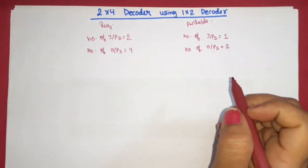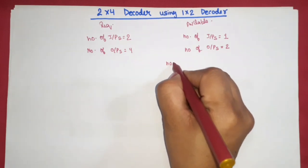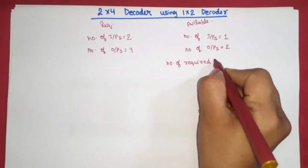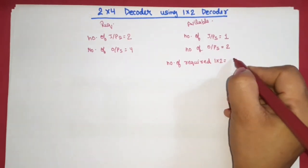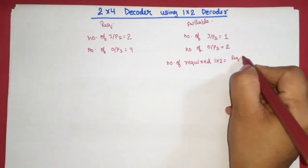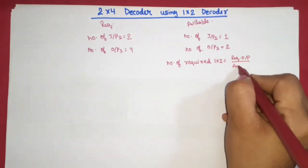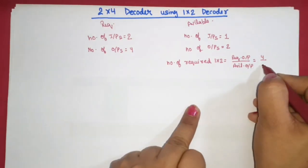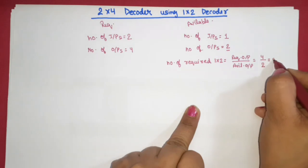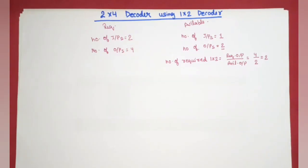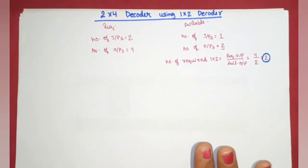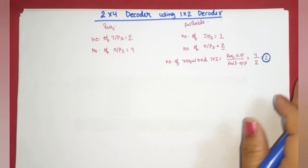So we can easily find how many one-to-two decoders are required. The number of required one-to-two decoders will be equal to required output divided by available output — that is four divided by two — which means we need two one-to-two decoders to implement a two-to-four decoder.